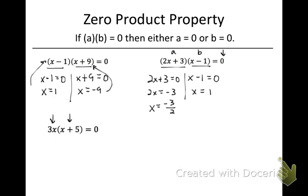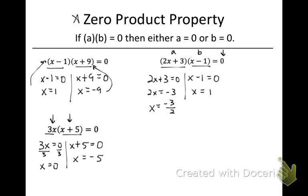This is a little bit different than the first two, but we still have two things multiplying together to equal zero. So we set each of them equal to zero and solve. I'm going to divide by three, so x equals zero, and then subtract five over. Keep this zero product property rule in mind, because we will come back to it after we have factored our quadratics to do the final step — finding what values we can plug in to make the equation true.